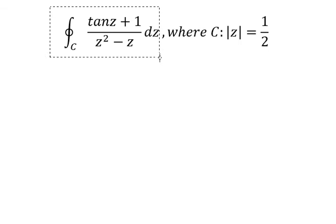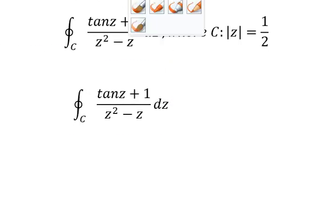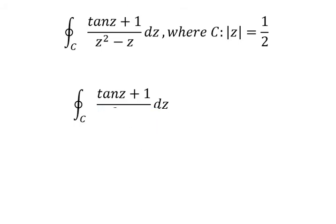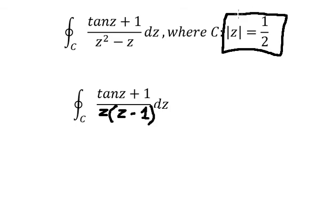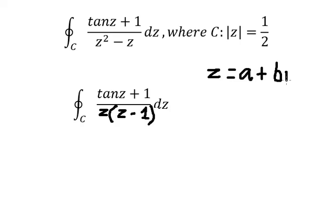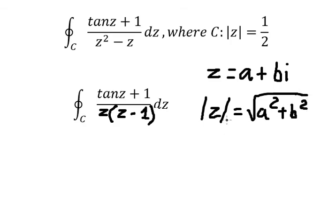For this one, we can do factorization by Z. We need to consider this one. We know that Z equals a plus bi. If we put this inside the absolute value, we have the square root equal to a squared plus b squared, and we know that this equals 1 over 2.